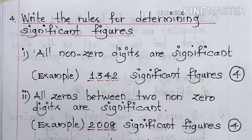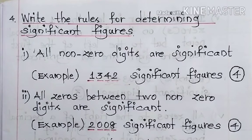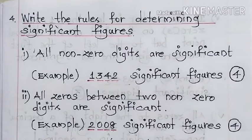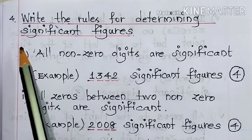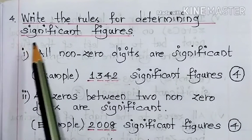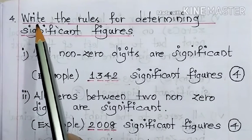Hello students, welcome back to this channel. Today in this video we are going to see Class 11 Physics, first chapter: Nature of Physical World and Measurement. This is the fourth question of five mark questions, so in this video we are going to see the fourth five mark question.